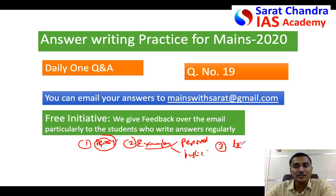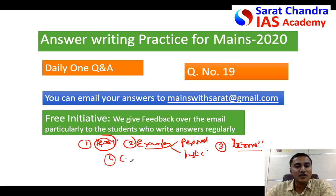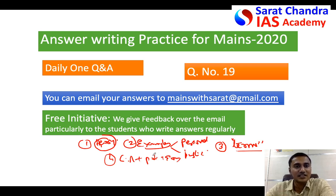The third important thing in an ethics exam is to use ethics terms. Remember the terms given in the GS Paper 4 syllabus — like integrity, honesty, fortitude, temperament, temperance — understand their meanings and try to use them in your answer as much as possible. The fourth thing is: try to relate ethics with current affairs, polity, or the Indian economy. Don't keep ethics as a dry subject — relate it to economy, current affairs, etc., to score higher marks.